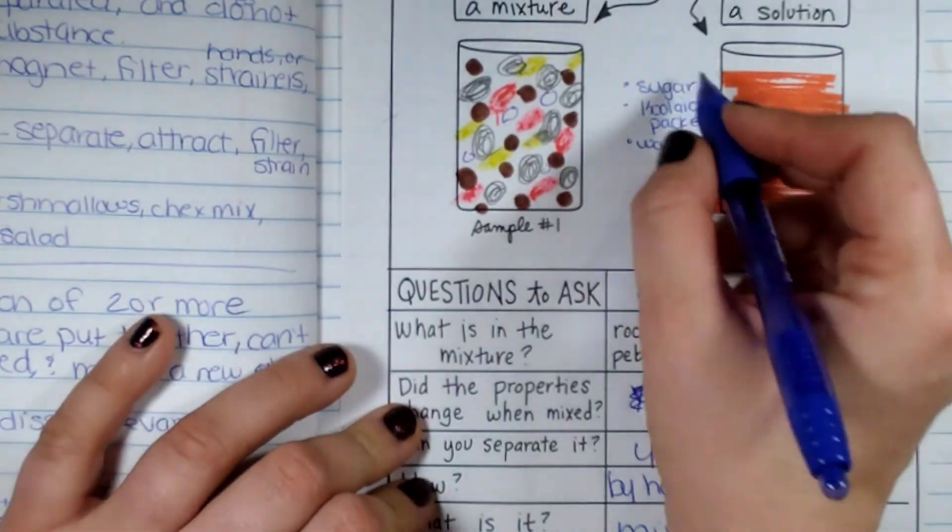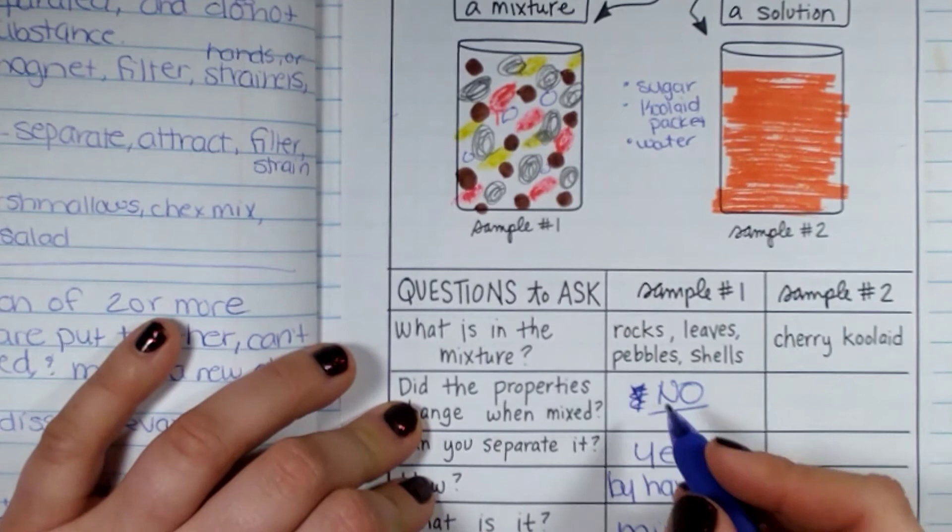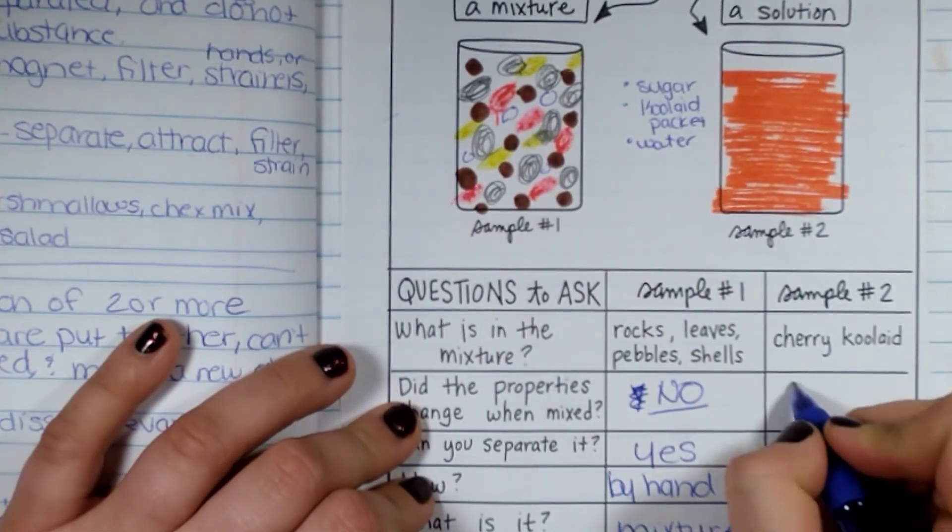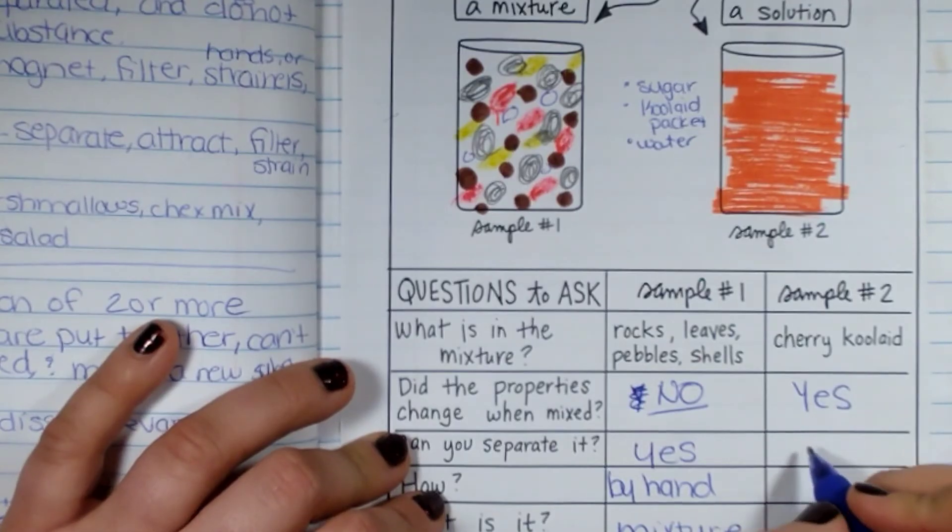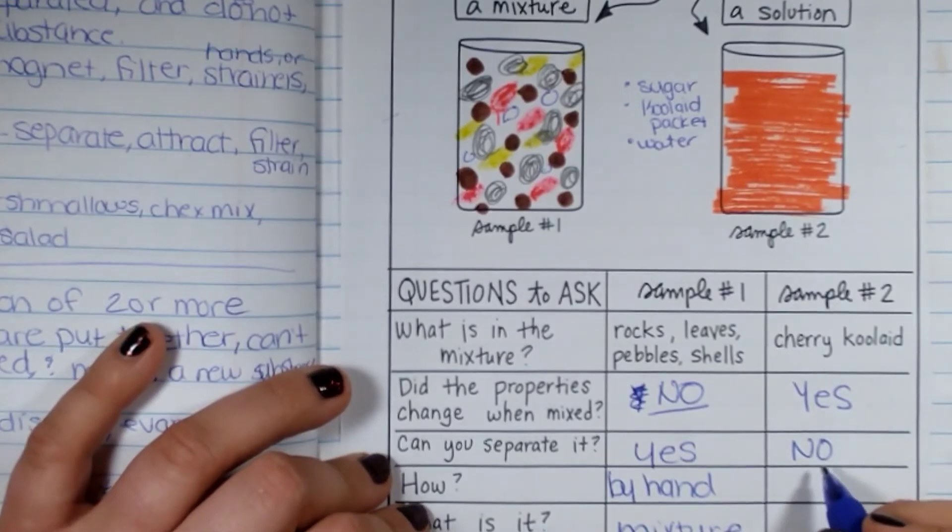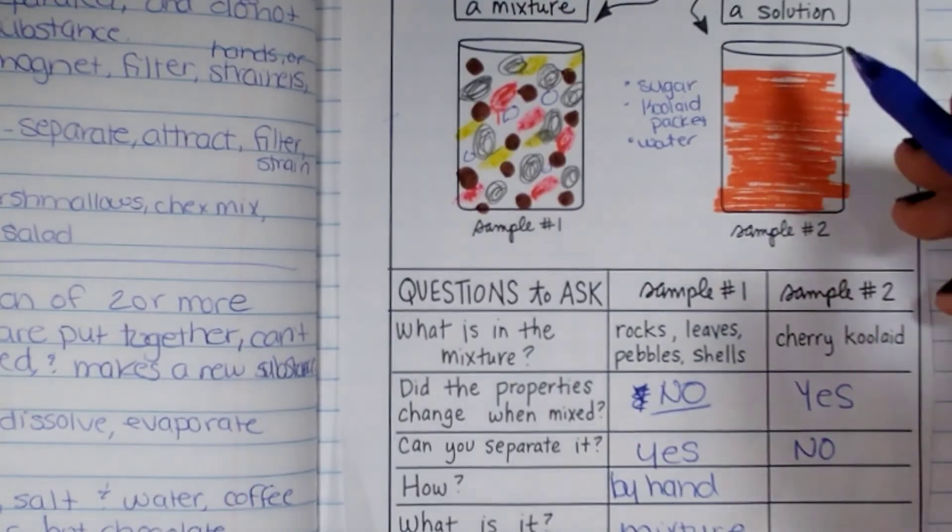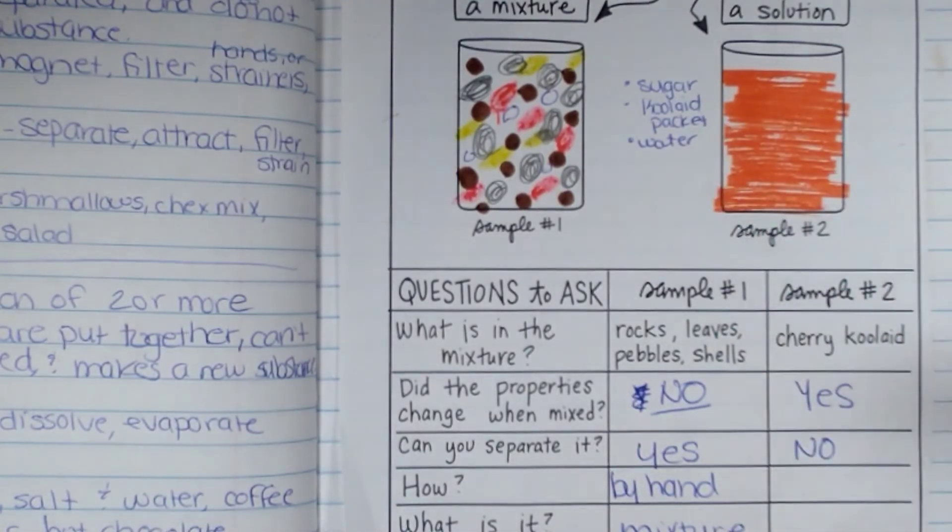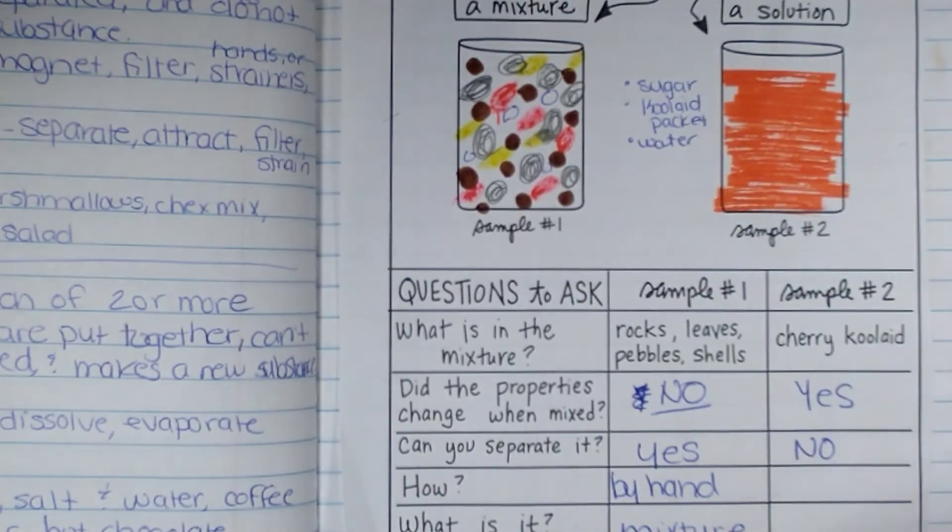Do the properties change when mixed? The sugar is no longer sugar, the Kool-Aid packet is no longer the Kool-Aid, and the water is now red. So yes, the properties do change. Can I separate it? Not very easily. I can separate it maybe by evaporation, and the sugar would be left behind and the Kool-Aid packet would be left behind. But it would be very difficult to separate the sugar in the Kool-Aid packet.